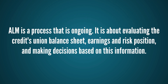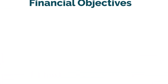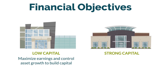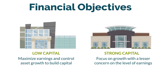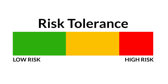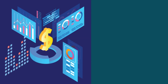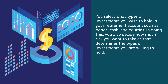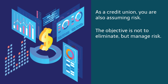ALM is a process that is ongoing. It is not running a stack of reports to provide to the examiner at exam time. Managing is about evaluating the credit union's balance sheet, earnings and risk position, and making decisions based on that information. Each credit union has their own financial objectives. A credit union with low capital may have an objective to maximize earnings and control asset growth to build capital. Meanwhile, a credit union with strong capital may be focused on growth with a lesser concern on the level of earnings. In order to effectively manage the assets and liabilities, it is necessary to define the financial objectives of the credit union. Additionally, it requires that your credit union know its risk tolerance. This can be compared to your own personal retirement — you may have a goal to have a certain sum of money by the time you retire, and you select what types of investments you wish to hold, such as bonds, cash, and equities, deciding how much risk you want to take. As a credit union, you are also assuming risk. The objective is not to eliminate, but manage risk.